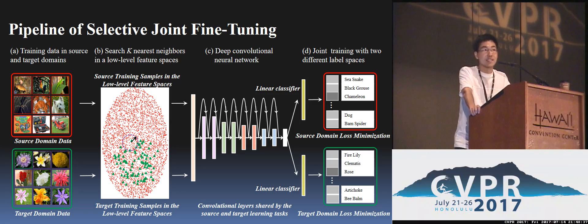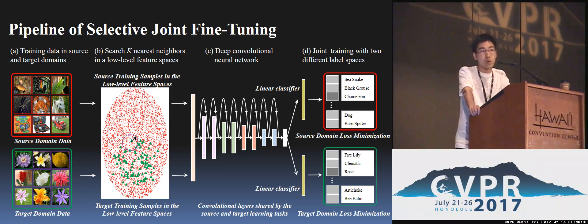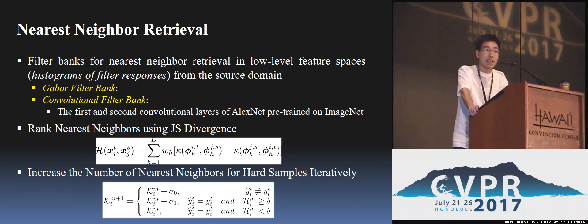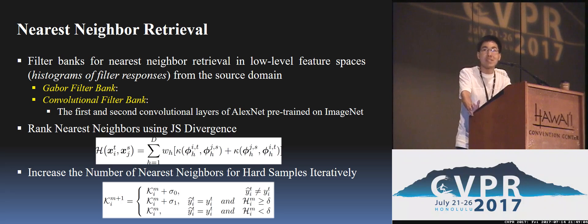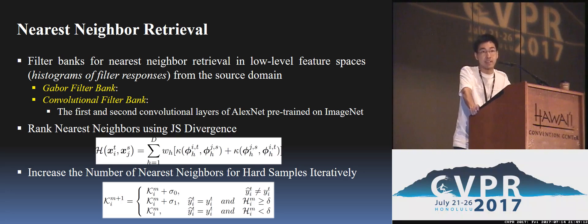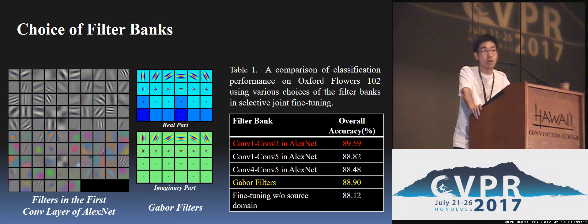The key difference from multi-task learning is that our goal is to improve the performance of the target task, not the source task. We use the histograms of filter responses as our low-level feature space. For filter responses, we have two options: the first is Gabor filters, and the second is convolutional filters in CNN. Note that convolutional filters, together with nonlinear activations, are actually nonlinear filters. In practice, we use the first two layers in AlexNet as our choice.